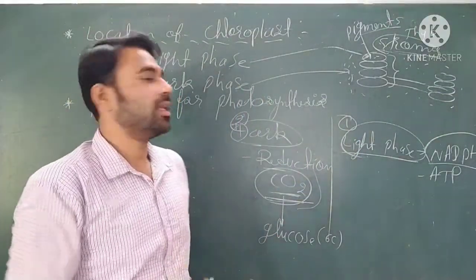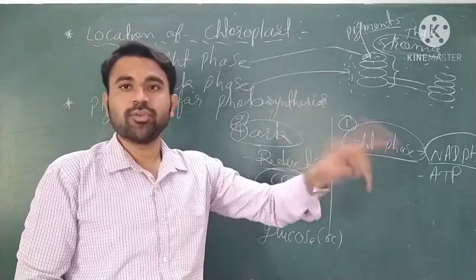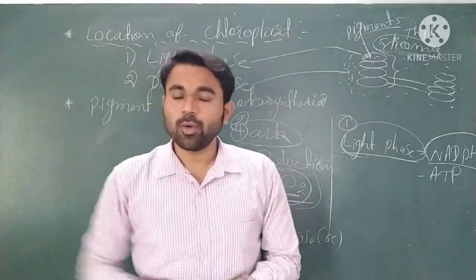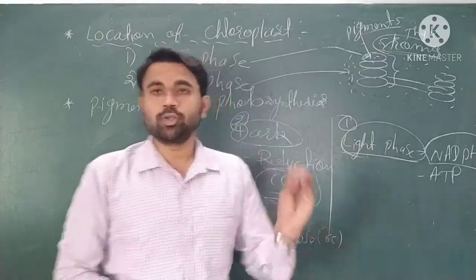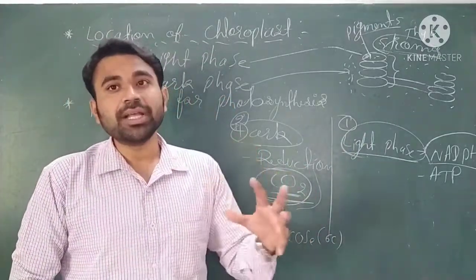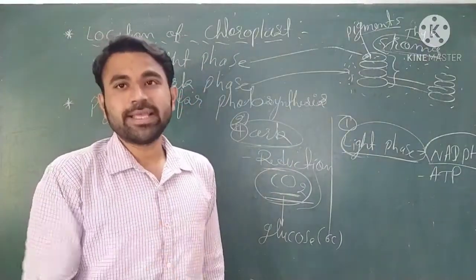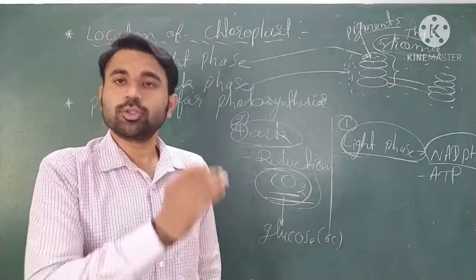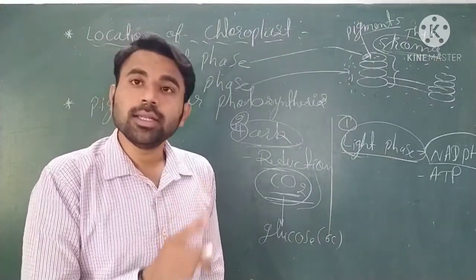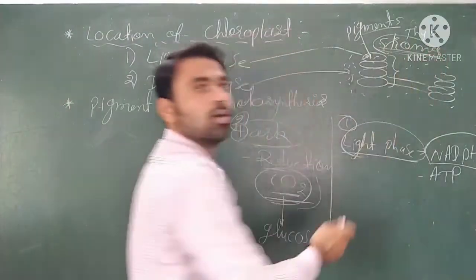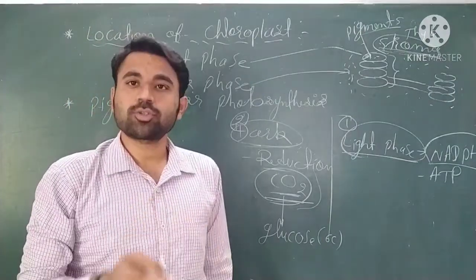The two phases are simultaneously continuous — light phase, dark phase, continuously. If there is no light, no NADPH2 or ATP will be made in the light phase, so the dark phase cannot continue. However, the dark phase itself does not require light — it happens in the stroma. That is why it is called the dark phase.